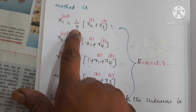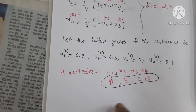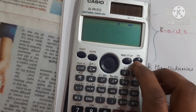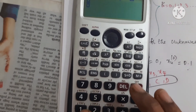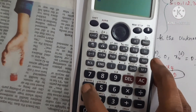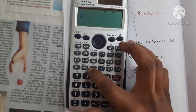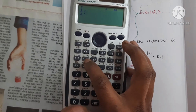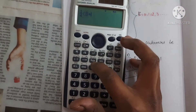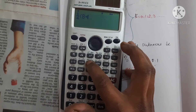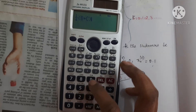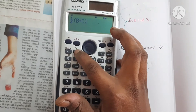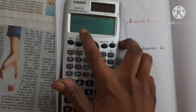Let us enter the RHS of each equation from the iteration formula. First, enter 1/4 of (x2 + x3). For x2 and x3, we are assigning variables b and c. So I need to enter 1/4 into (alpha b + alpha c), then close brackets. Now add the separation using the colon — which is also in pink color — so type alpha then the integration symbol.